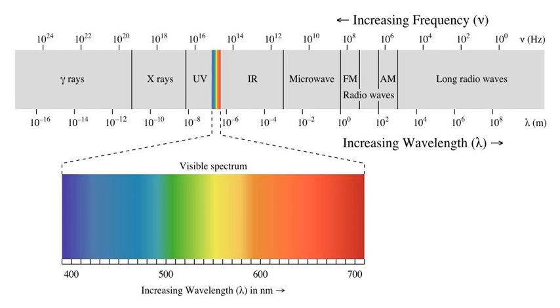Visible light communication is a data communications variant which uses visible light between 400 and 800 terahertz, 780 to 375 nanometers. VLC is a subset of optical wireless communications technologies.